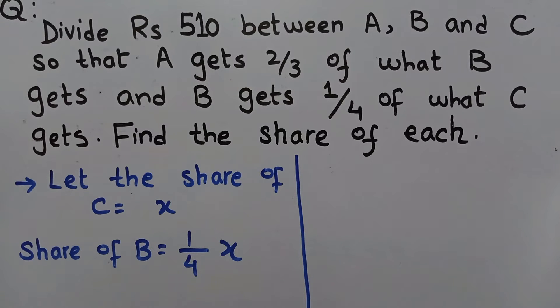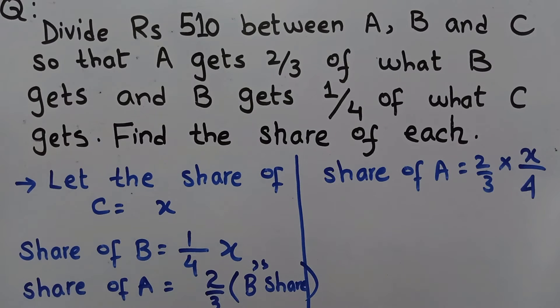A gets 2/3 of the share of B. Now B has a share of X/4. Then we multiply 2/3 by X/4. We get 2X/12. Then we can cancel, so we get X/6.